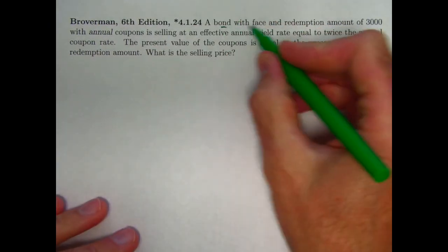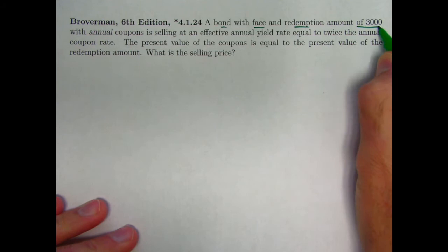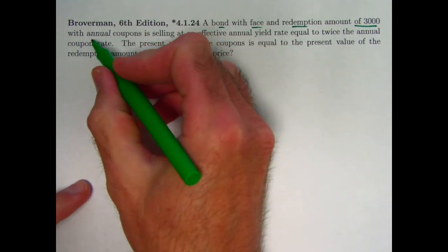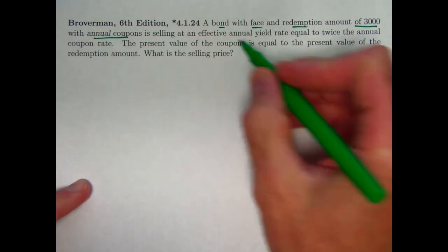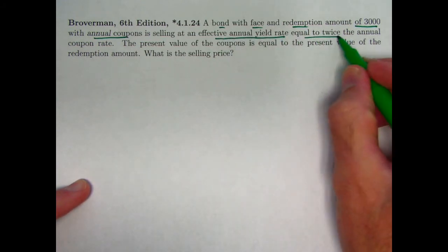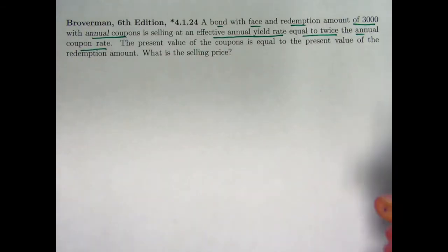So we've got a bond with a face and redemption amount that are the same, 3,000. We assumed F and C, the face and redemption amount, were the same in the last video to write down that form of Makeham's formula. We've got annual coupons where the bond is selling at an effective annual yield rate, which is equal to twice the annual coupon rate. So here we've got a relationship between the yield rate J and the coupon rate R, that one is twice the other. That's a hint that Makeham's formula in one of the forms, at least that I showed you in the last video, could be useful.